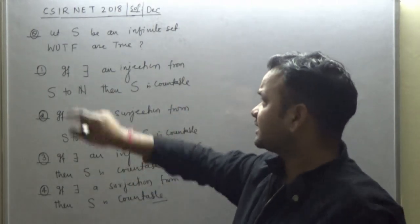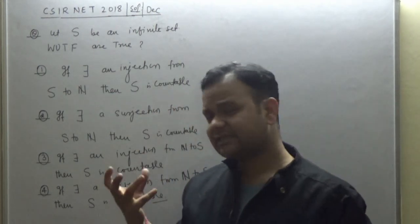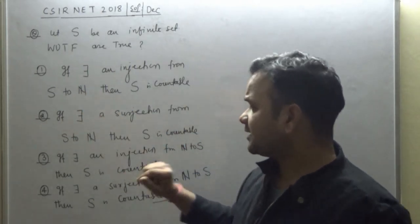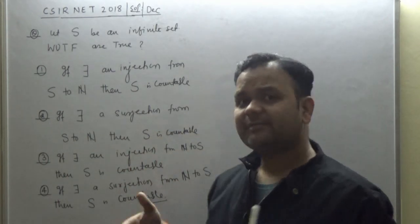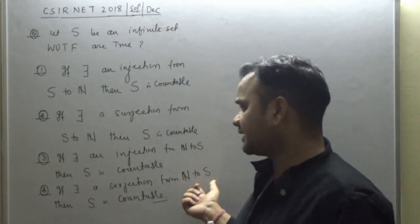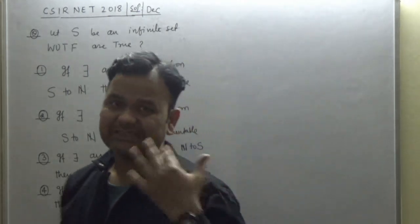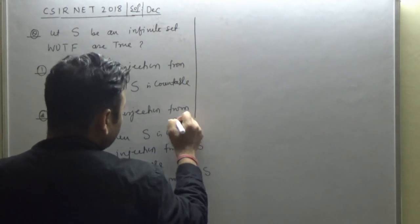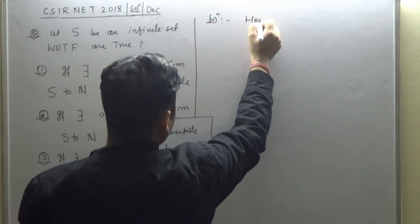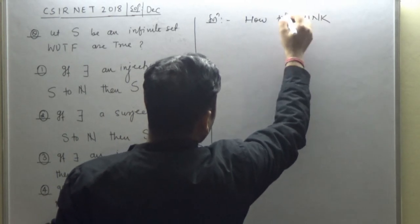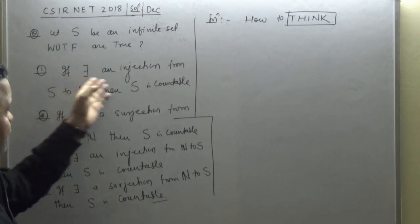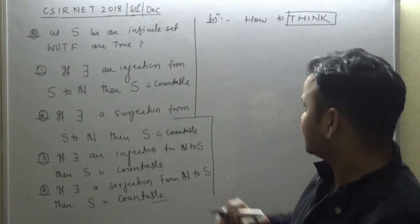So options are clear. The question is about an infinite set. If you have an injection from S to N, then will S be countable? If you have a surjection from S to N, then will S be countable? If there exists an injection from N to S, then will S be countable? If there is a surjection from N to S, then will S be countable? Let's discuss how to think and what approach we should have.